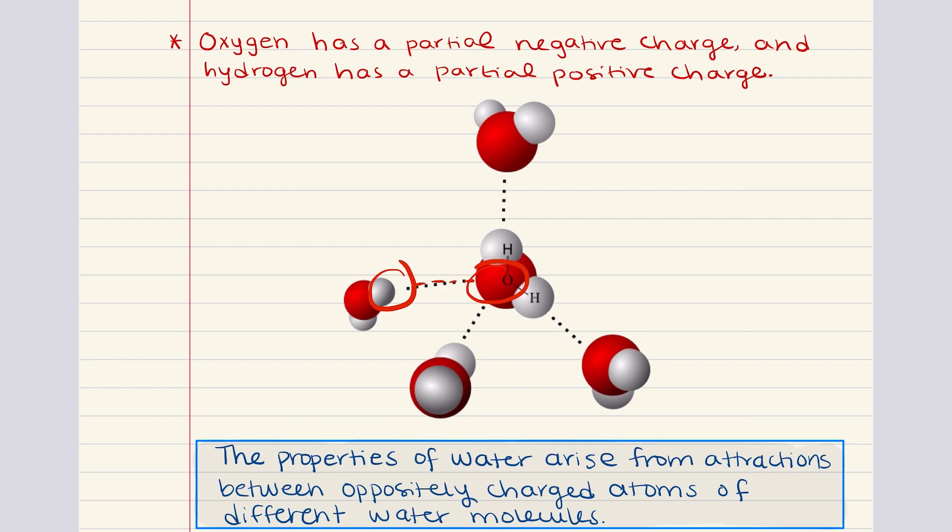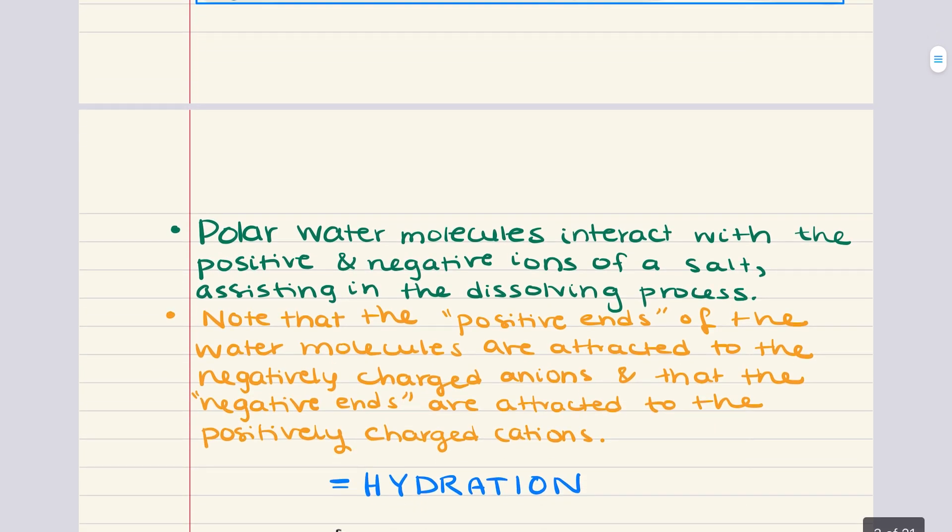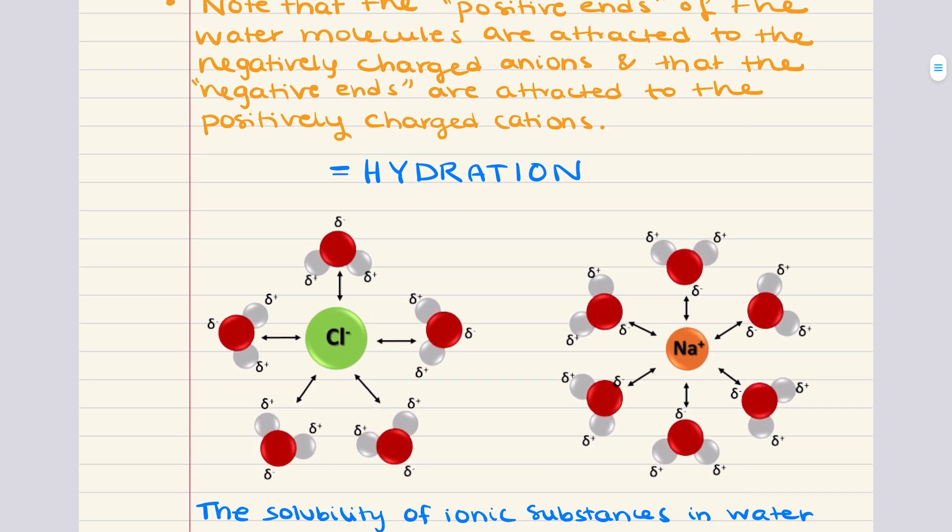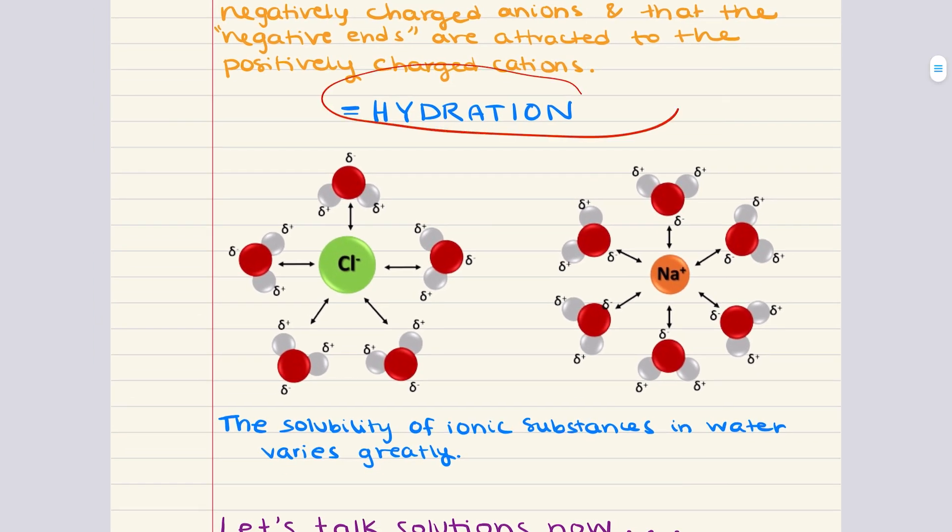Now, besides water molecules interacting with other water molecules, these polar water molecules also interact with the positive and negative ions of salt. And this assists in the dissolving process. Please note here that the positive ends of the water molecules are going to be attracted to the negatively charged anions. And the negative ends of the water molecules are attracted to the positively charged cations. And this process is called hydration.